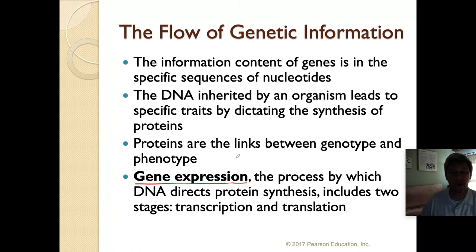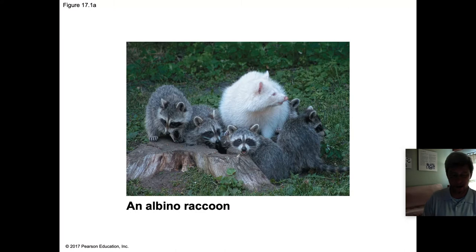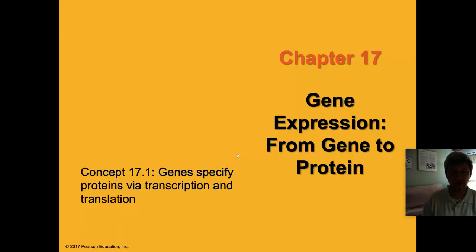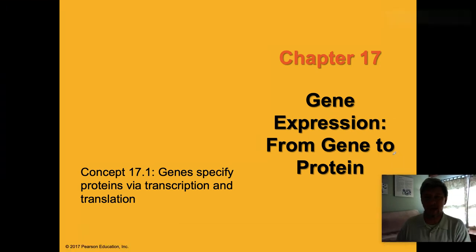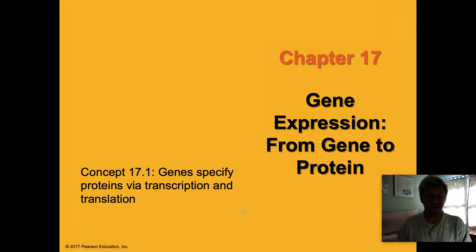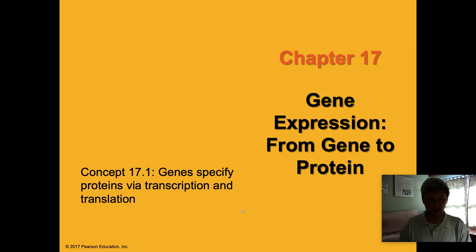The genes that white raccoon has direct its protein synthesis, and they do so in two different stages. In section 17.1, the genes specify proteins via two processes: transcription and translation.